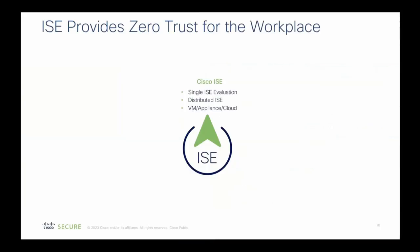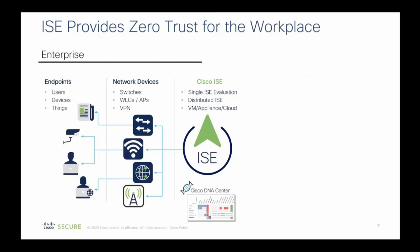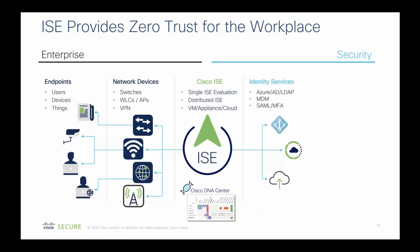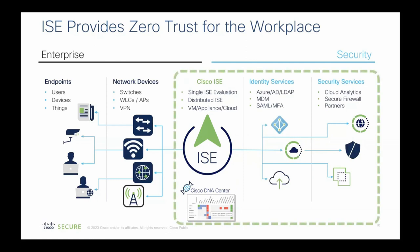To orient you into what we're talking about with PX Grid, ISE sits in the enterprise working with network devices to authenticate users and devices coming into our network. Our own Cisco DNA Center can provision network devices to talk with ISE as their AAA server, working through ISE with not only REST APIs but also PX Grid to get live updates.